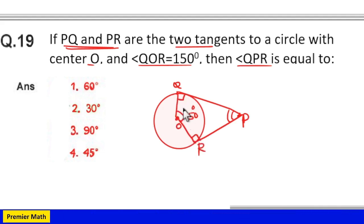Now if these two are 90, 90 plus 90 is 180. Sum of angles of a quadrilateral is equal to 360 degrees.